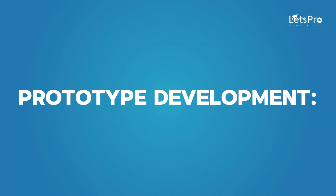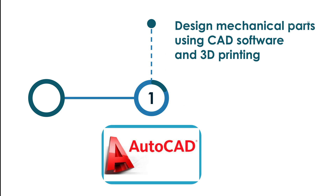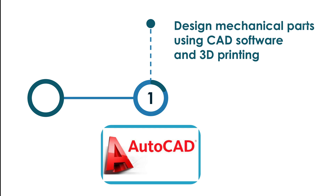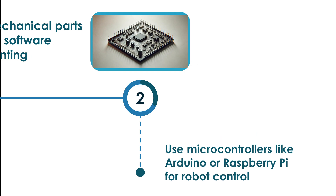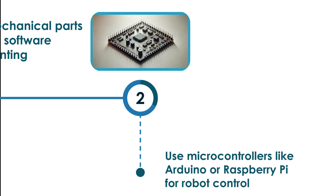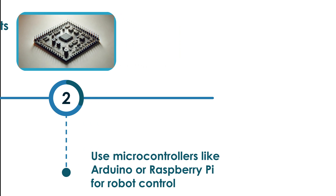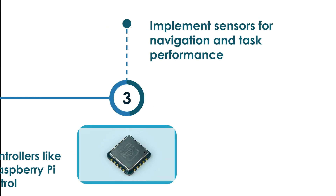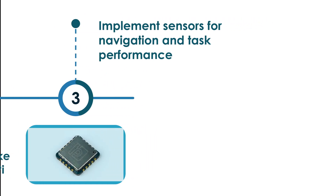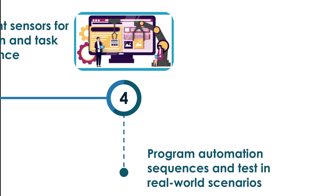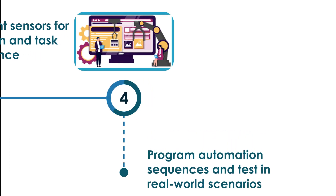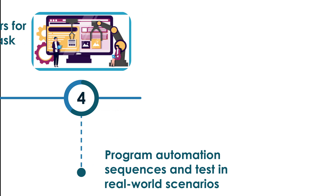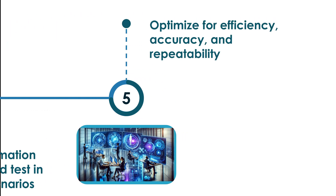For prototype development, design mechanical parts using CAD software and 3D printing. Use microcontrollers like Arduino or Raspberry Pi for robot control. Implement sensors for navigation and task performance. Program automation sequences and test in real-world scenarios. Optimize for efficiency, accuracy and repeatability.